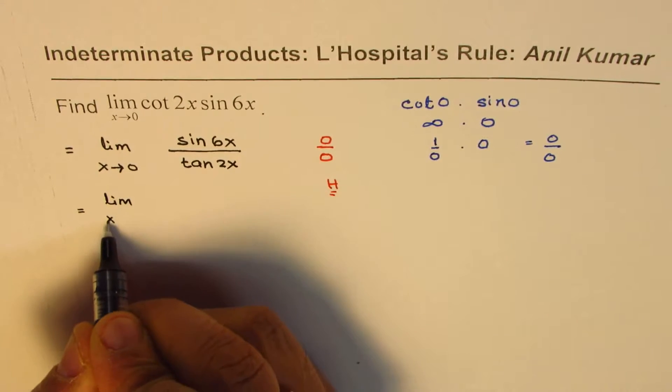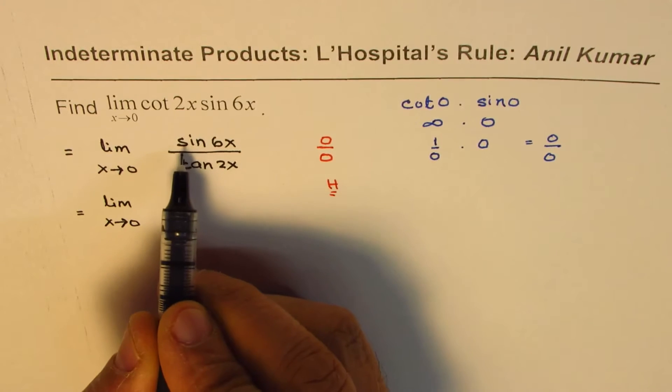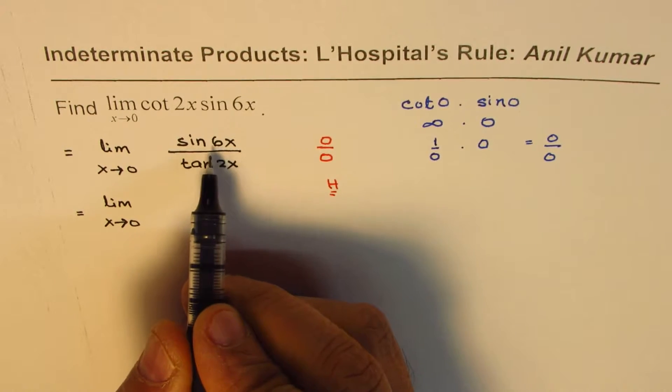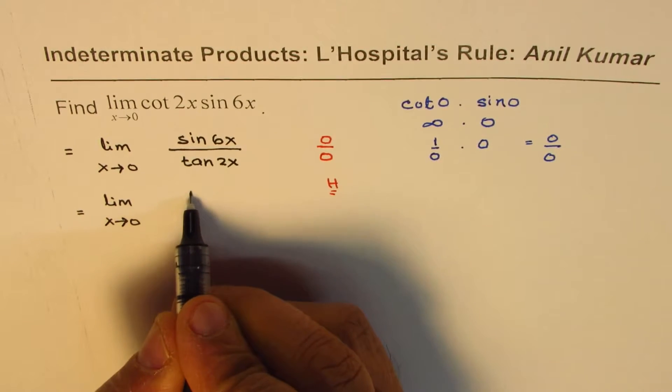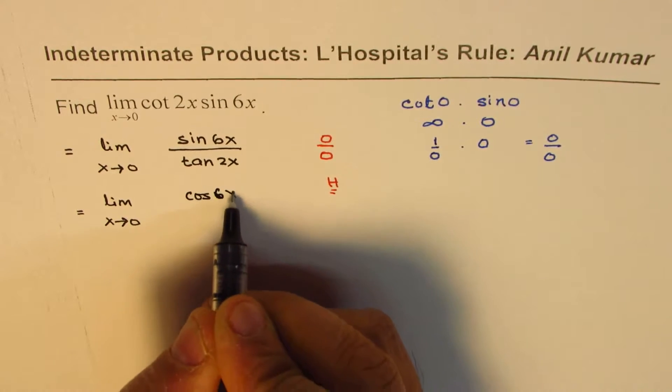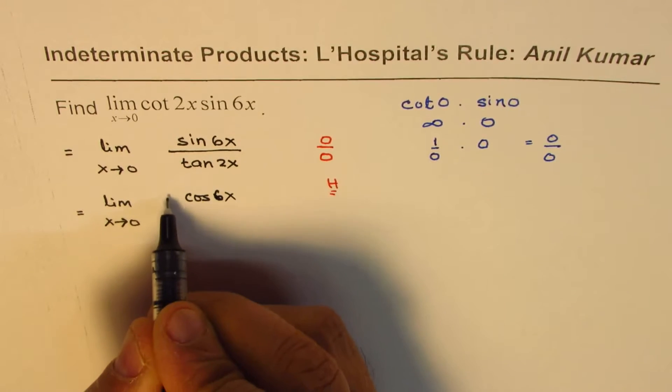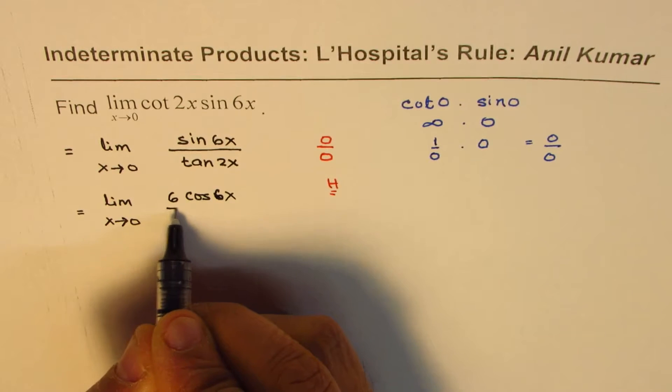So we get limit x approaches 0. Sine x derivative is cos x. So we get cos 6x this time. And derivative of 6x is 6. So 6 times cos 6x.